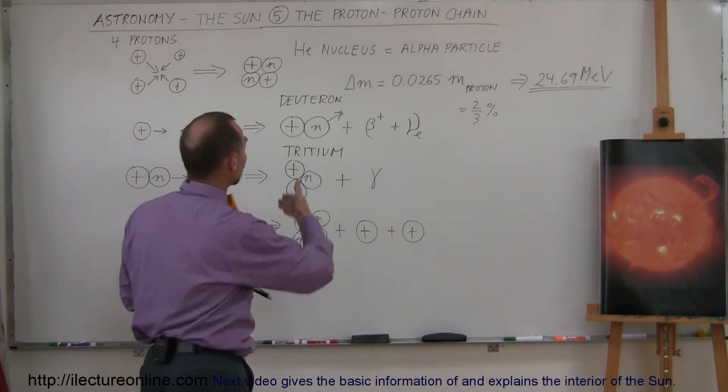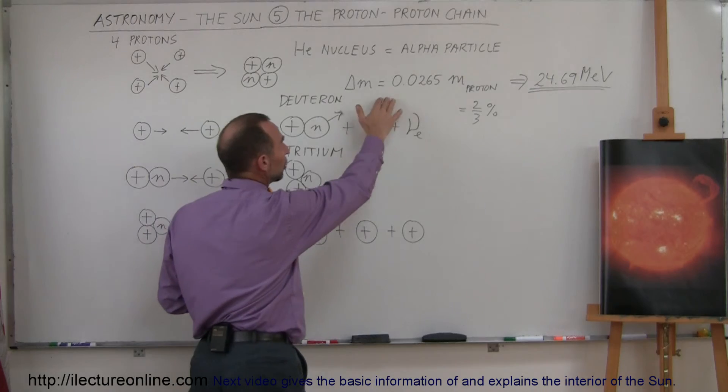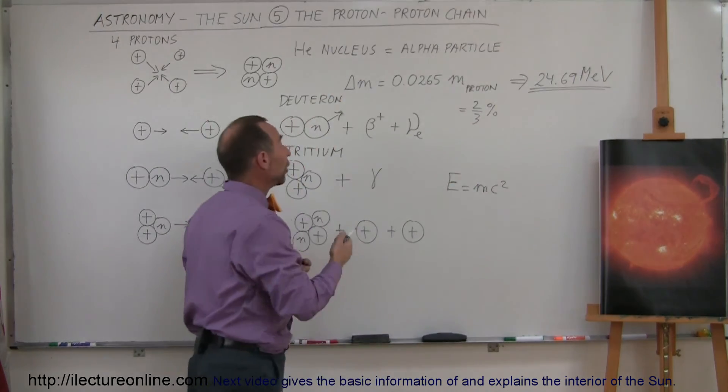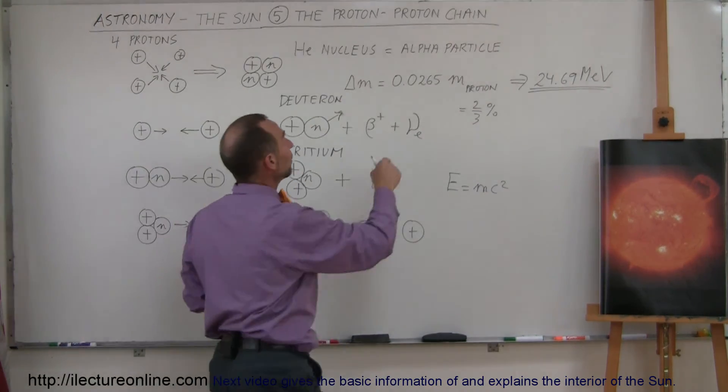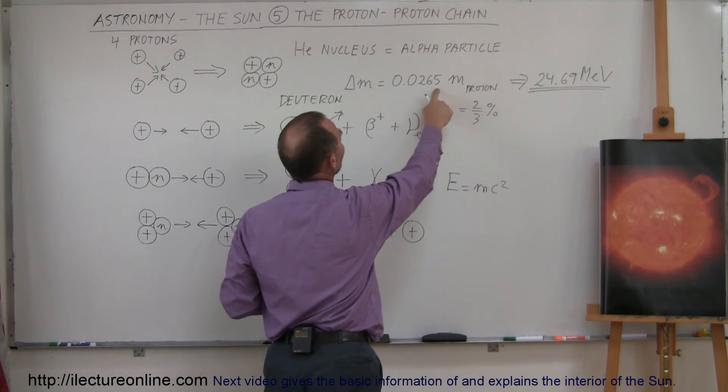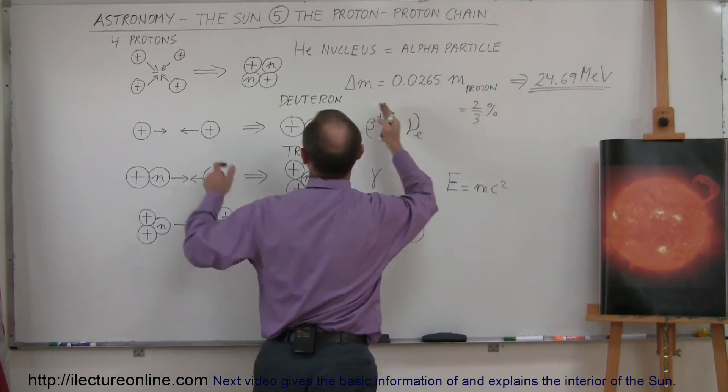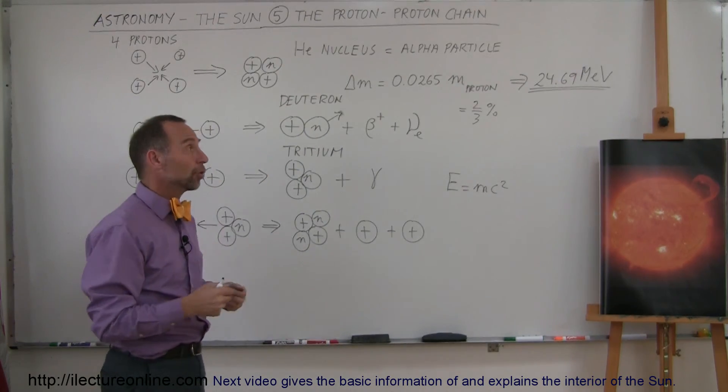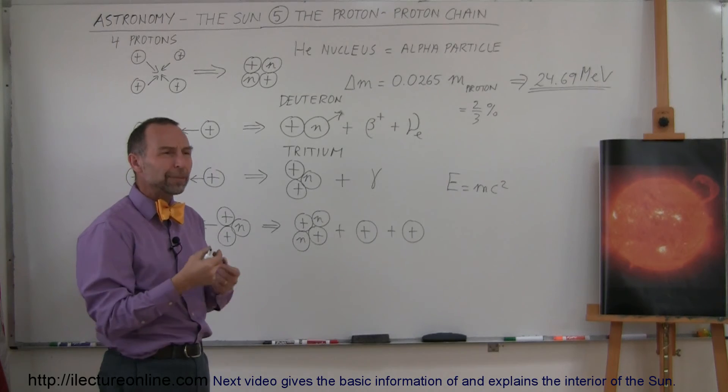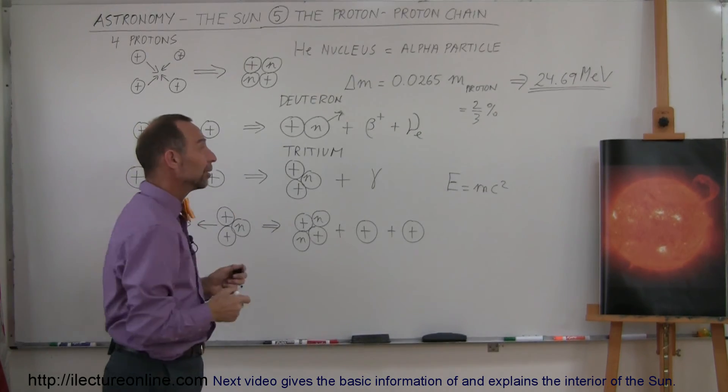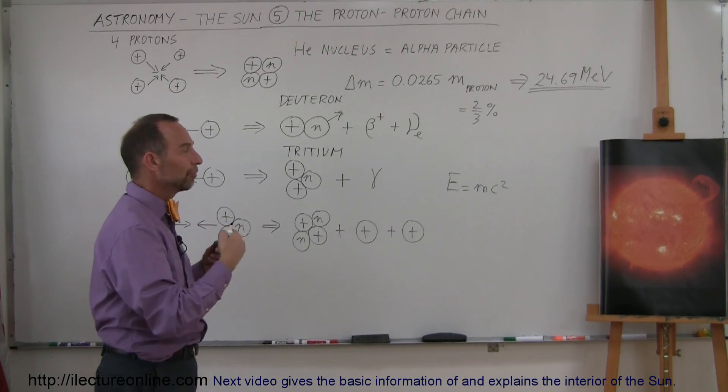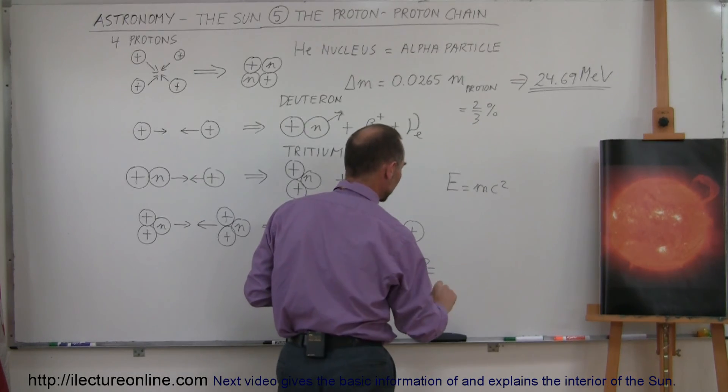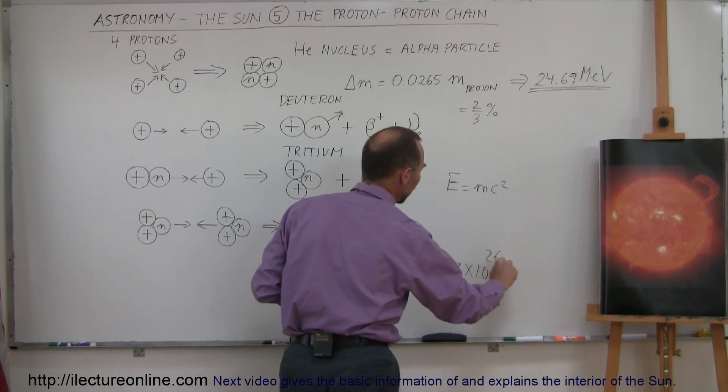So what happens through this process is mass is being converted into energy with the equation E equals mc squared. And in this series of processes, what we call the proton-proton chain of nuclear fusion, the amount of mass lost is about 0.0265 times the mass of a single proton, which is about two-thirds of the mass of the particles involved, which releases a total energy of 24.69 MeV - that's a million electron volts. That's a lot of energy in a very tiny little reaction, and in that process, the sun converts enough mass to energy to produce this enormous quantity of energy per unit time or the amount of power or luminosity equal to 3.9 times 10 to the 26 watts.